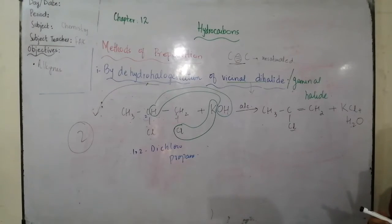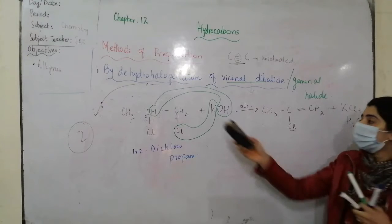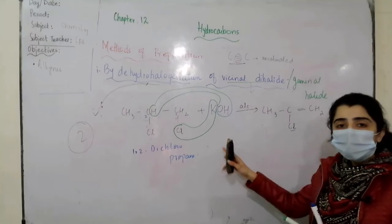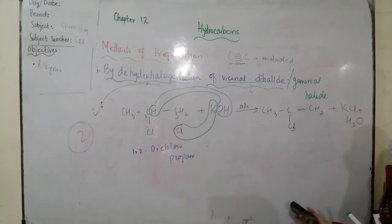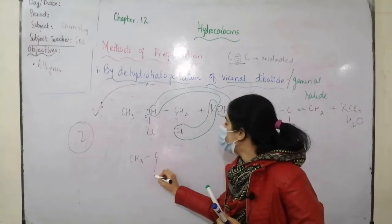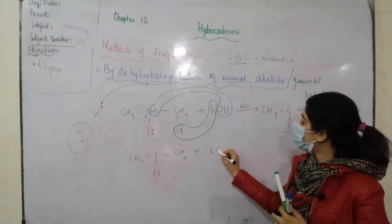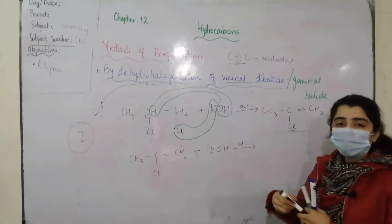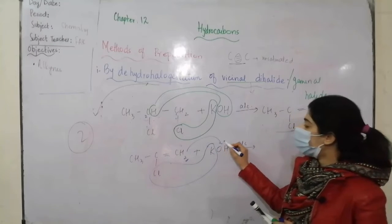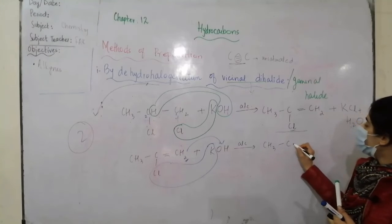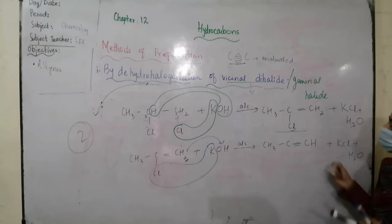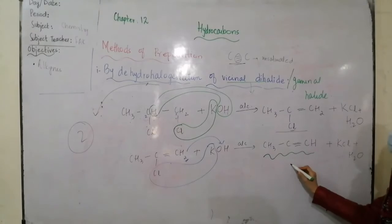Because there is still a halide atom present, you have to remove it further. We will treat CH3-CCl=CH2 again with potassium hydroxide in the presence of alcohol. In this next step, potassium bonds with the halide, and OH bonds with the remaining hydrogen atom. This leads to the formation of CH3-C≡CH plus KCl plus H2O. This is propyne — your desired alkyne product.